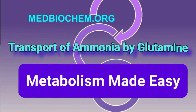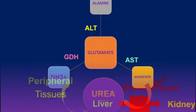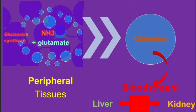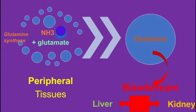When ammonia is produced in the liver, it is easily detoxified by incorporating it into the urea molecule through the urea cycle. However, ammonia can also be produced in many peripheral tissues locally, and it could be quite toxic to these tissues. So there is a mechanism for detoxifying that ammonia peripherally, which we will discuss shortly.